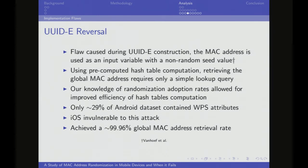Previous research talked about UUID reversal coming from a WPS attribute. The problem is the UUID is constructed from the actual MAC address with a non-random seed. So you can link your global and locally assigned probe requests with the UUID, or if you only have the locally assigned one, you can use a pre-computed hash table to derive the global MAC address. What wasn't done in previous work is highlighting which manufacturer models this works against. We applied this against our entire dataset and saw that only about 30% of devices actually use WPS while randomizing. iOS doesn't use WPS at all.